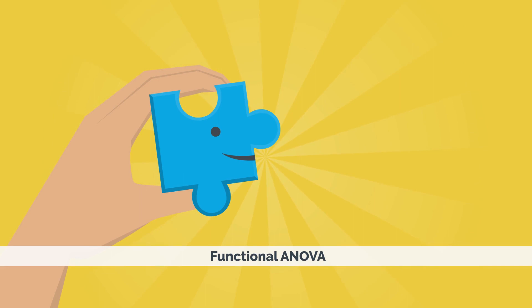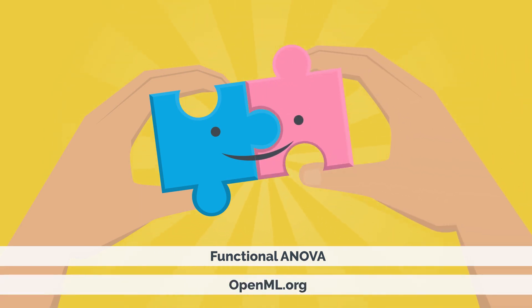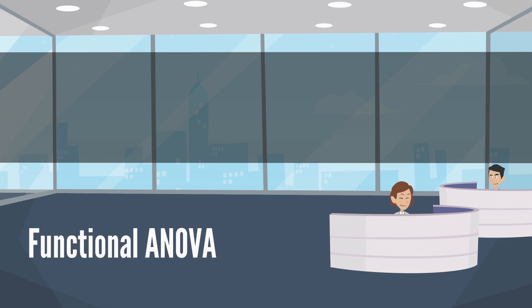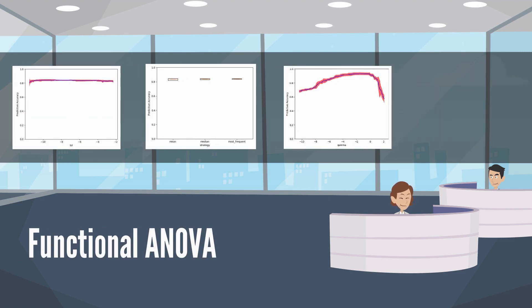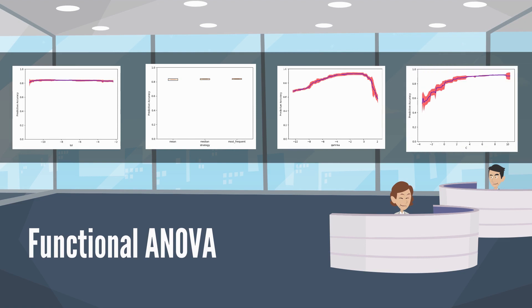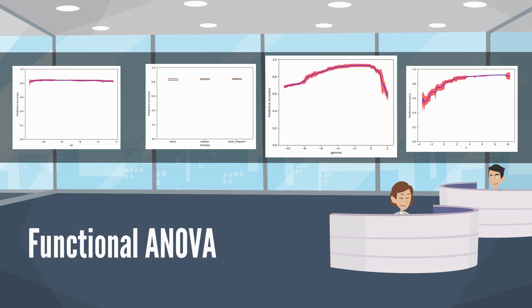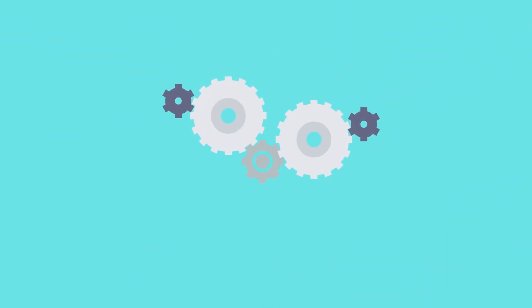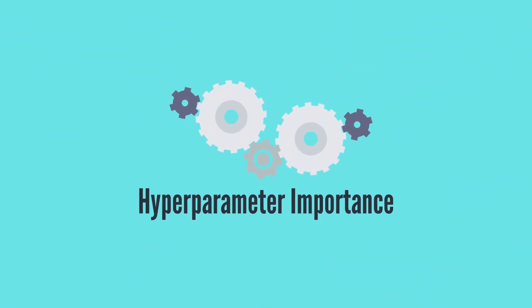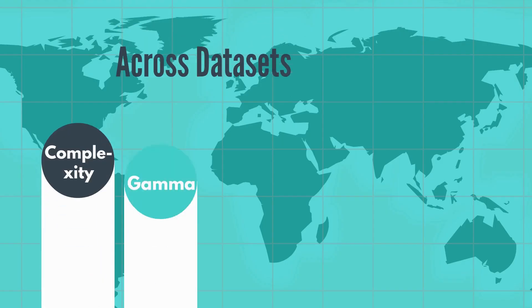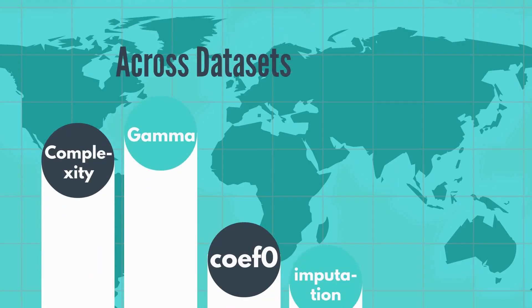To answer the first question, we use the functional ANOVA framework and the experimental data available on openml.org. Functional ANOVA decomposes the variance of the algorithm's performance into contributions of each hyperparameter. It tells, for example, given a dataset, which hyperparameters influence performance most. We perform this analysis over 100 datasets from OpenML to learn which hyperparameters are generally important.